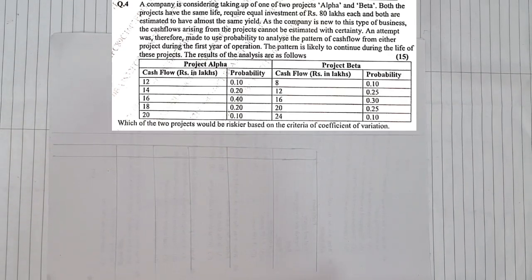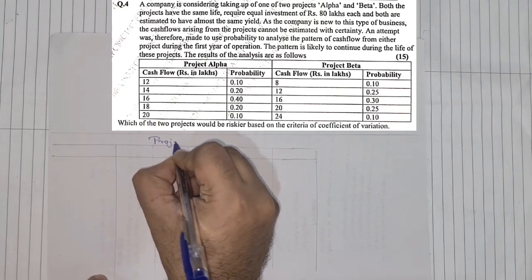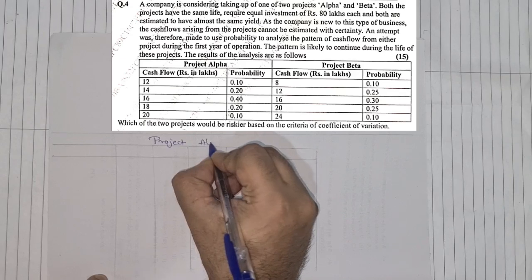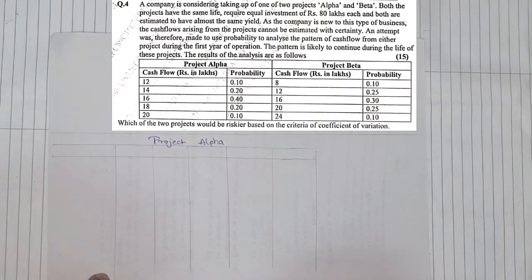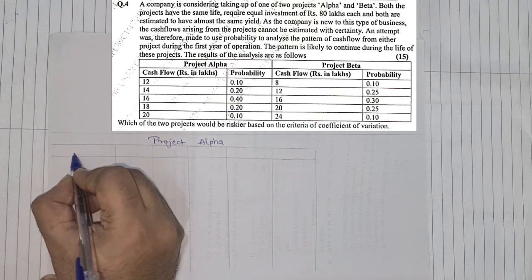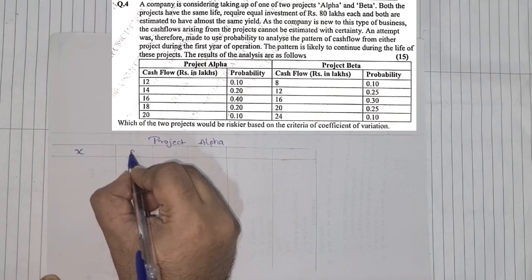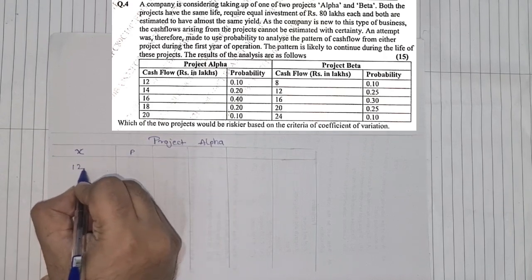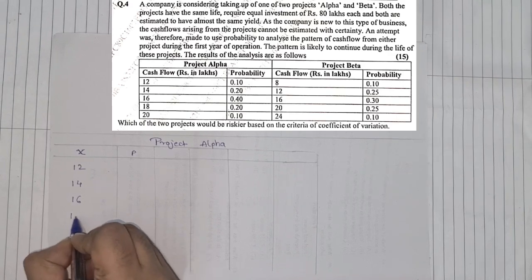So let us start the sum. First I am going to do for Alpha, Project Alpha. Now very first thing, cash flow is given to us. I am taking this as X, and probability is P. So we have 12, 14, 16, 18, and 20.